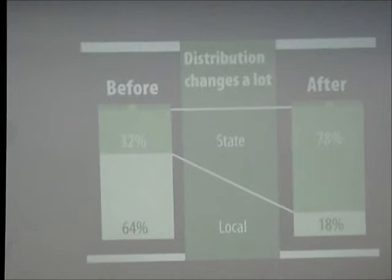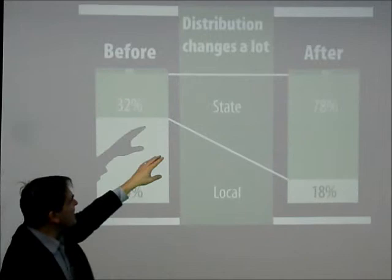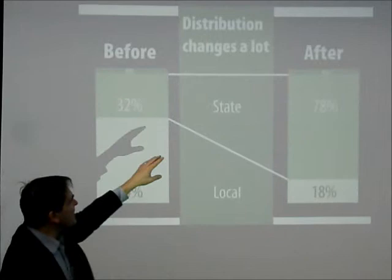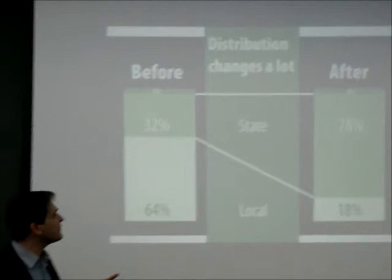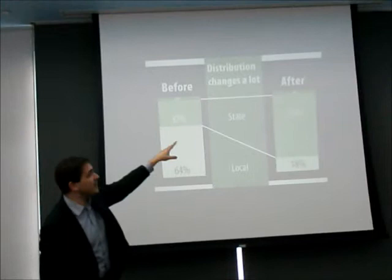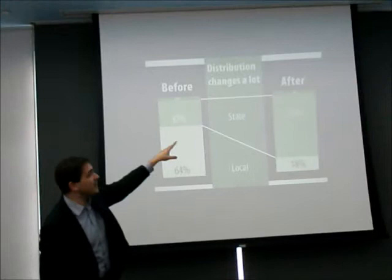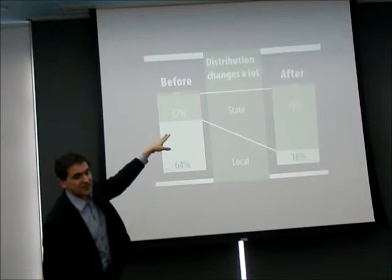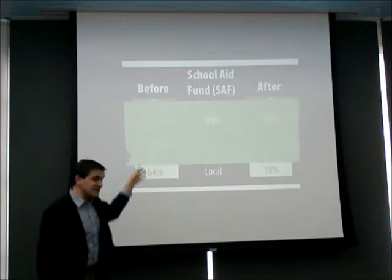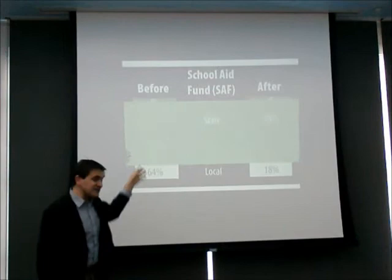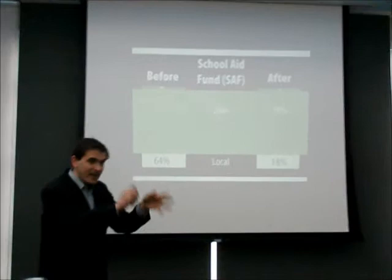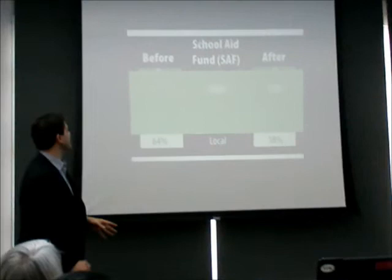After Proposition A, federal money — fairly fixed — saw a big change in the early 2000s with No Child Left Behind, increasing the federal share to about a tenth or an eighth. But the really big differences are in state versus local allocation. I want to look at that 78%, which we call the School Aid Fund — the bucket where school money goes, then distributed to districts on a per-student basis.